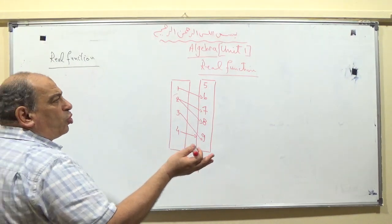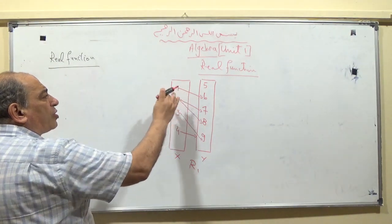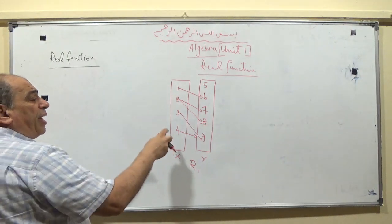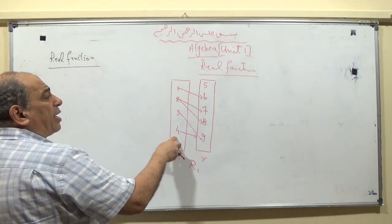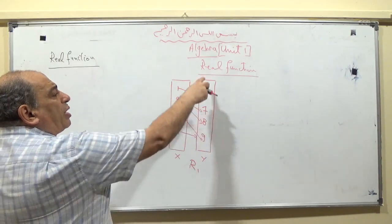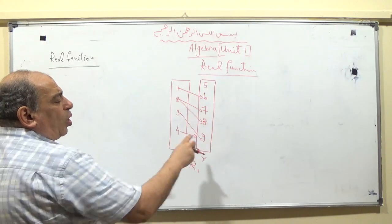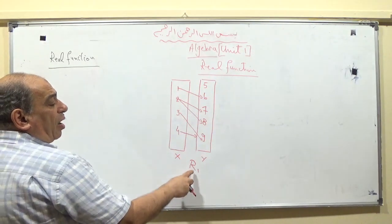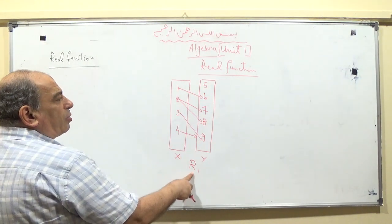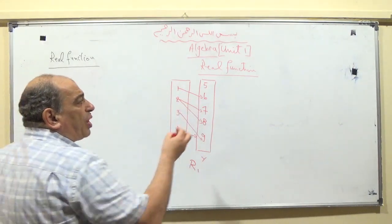A function is a relation such that each element in X is related with only one image — one element in Y. R1 is not a function because element 2 has two images.